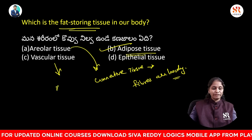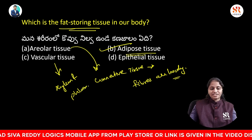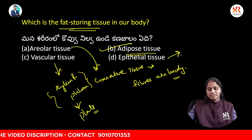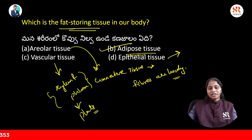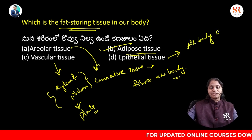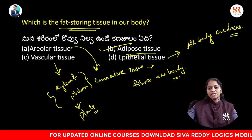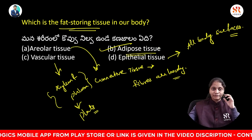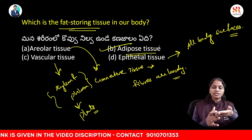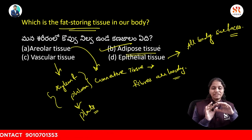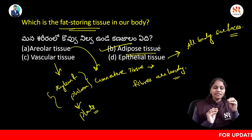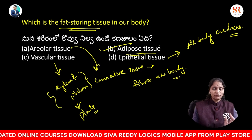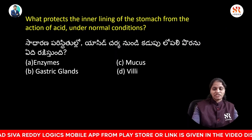Vascular tissues include xylem and phloem — for transport of food, water, and support of plants. Epithelial tissue covers all body surfaces. So to summarize: fat-storing tissue is adipose tissue; epithelial tissue covers body surfaces; areolar tissue has loosely arranged fibers and is a connective tissue; vascular tissue includes xylem and phloem for transport of food and water in plants.